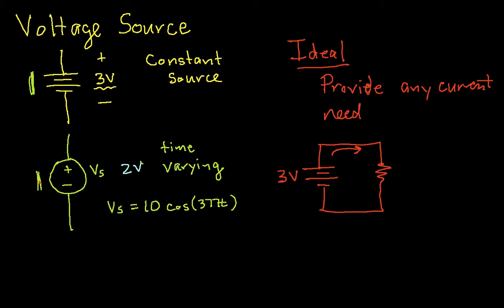So no matter what size light bulb I have, say for example, the light bulb we've been talking about is about a 1.4 watt light bulb. If I were to replace that 1.4 watt light bulb with a billion watt light bulb, this voltage source would increase the current necessary to be able to provide a power of a billion watts at 3 volts.